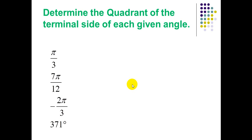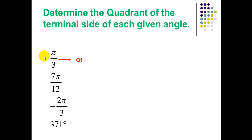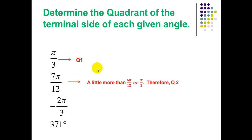Determine the quadrant of the terminal side of each angle. π/3 is less than π/2, so it lies in the first quadrant. For 7π/12: it is a little more than 6π/12, which equals π/2, therefore it is in the second quadrant.